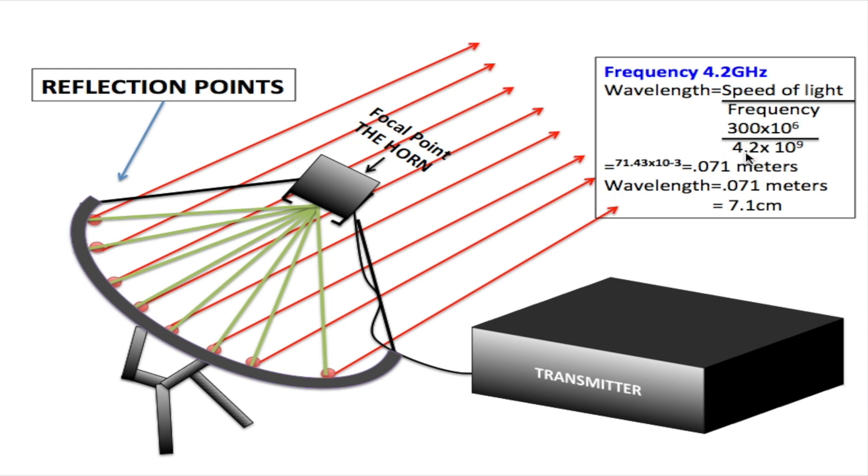Under here I have 4.2, that's the 4.2 gigahertz which is 4.2 billion hertz, that's nine zeros after the 2. So I just took the nine zeros off and multiplied that by 10 to the 9. Now I divide 300 by 4.2 and I get 71.43 times 10 to the negative 3. I got 10 to the negative 3 by subtracting 10 to the 6 minus 10 to the 9.